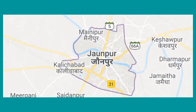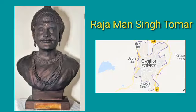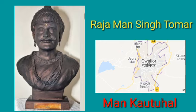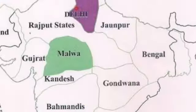The rulers of Jaunpur were great patrons of music. Two works of music, Ghunyal Al-Muniyas and Sangeet Siromani, were compiled in Jaunpur, which is in present-day Uttar Pradesh. Sultan Husayn Shah Sharqi of Jaunpur took great interest in music and is believed to have created many new ragas. Raja Man Singh Tomar of Gwalior was also a patron of music and wrote a book called Man Kautukhal. A distinctive style of music developed in the kingdom of Kashmir, and music also prospered in Gujarat and Malwa.